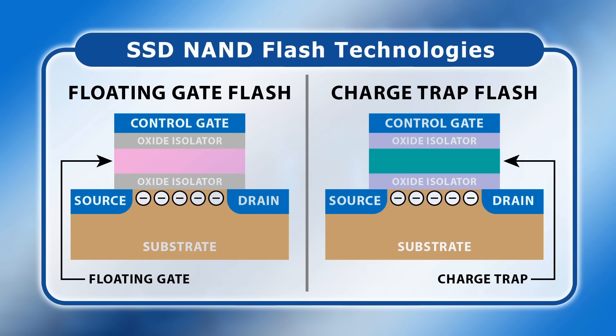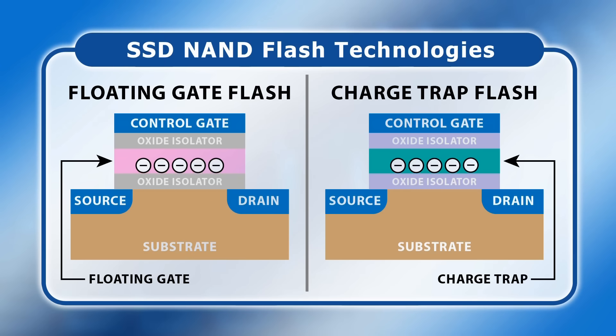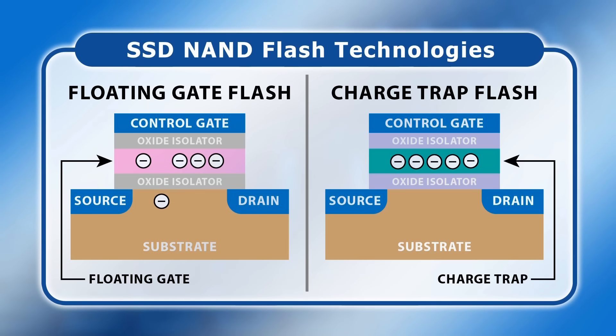Repeated program-erase operations weaken the material cells are made from, which results in electrons either escaping a floating gate or being retained in a charge trap. After a certain number of program-erase or PE cycles, it therefore becomes impossible for the cell to reliably function. The practical implication is that all SSDs can only sustain a limited number of data-write operations before they fail.